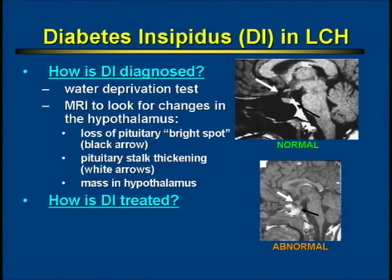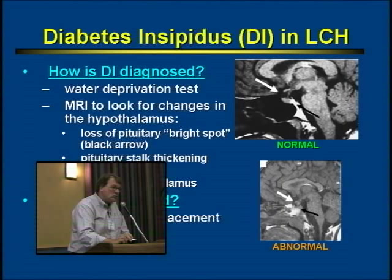If you have diabetes insipidus, how is it treated? Fortunately, now we have a synthetic vasopressin that can be given as a pill, which very effectively regulates fluid balance. So it's no longer a life-threatening condition if diagnosed properly, but it is a chronic condition that you have the rest of your life.